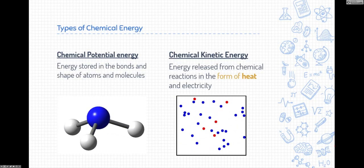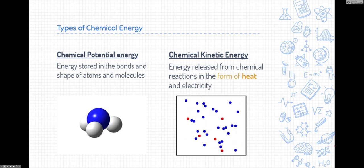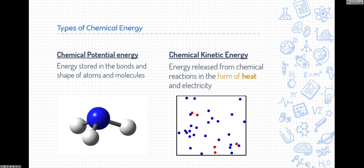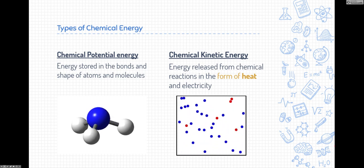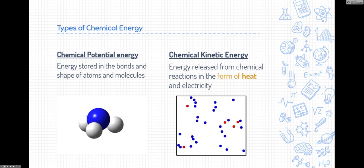Now think about energy. There's two types of energy: kinetic energy and potential energy. Those are the main broad forms of energy transfer. In chemistry we're going to talk specifically about chemical potential energy and chemical kinetic energy.